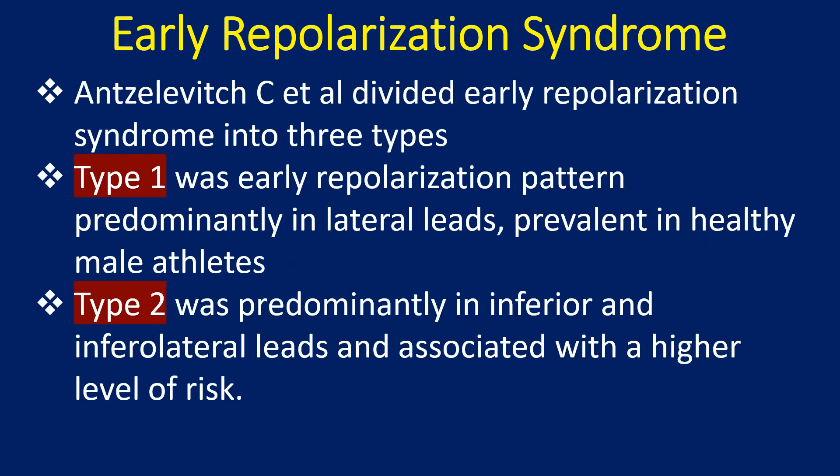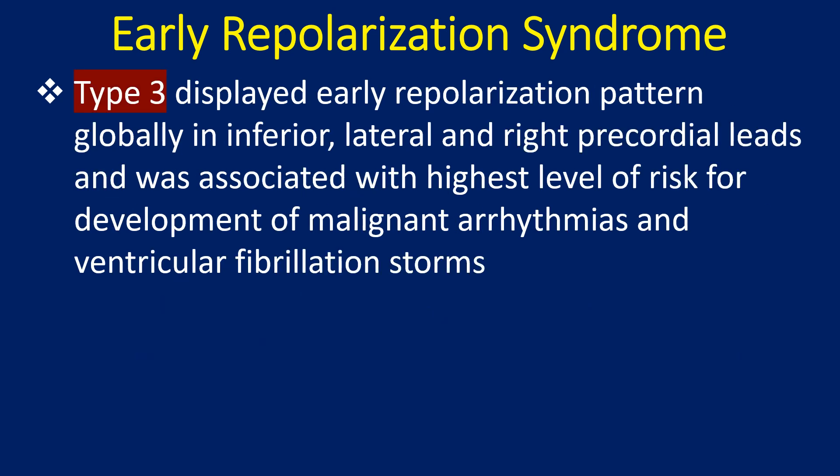Ann Slewitz and colleagues divided early repolarization syndrome into three types. Type 1 was early repolarization pattern predominantly in lateral leads, prevalent in healthy male athletes. Type 2 was predominantly in inferior, infralateral, and right precordial leads and associated with a higher level of risk. Type 3 displayed early repolarization pattern globally in inferior, lateral, and right precordial leads, and was associated with the highest level of risk for development of malignant arrhythmias and ventricular fibrillation storms.